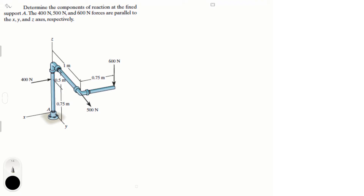So this is a free body diagram and I always like to draw my axis on the side. This is just a habit of mine that has helped me — I advise you to do it too — to always keep things in perspective because it can get messy. At A, you have a reaction this way and a reaction this way. I always like to draw my reactions on 3D body diagrams towards the positive axis, so I use this as a reference when drawing.